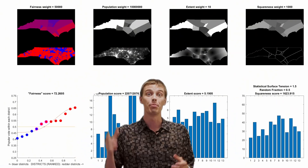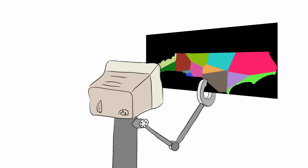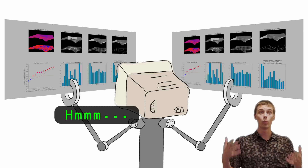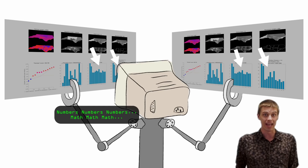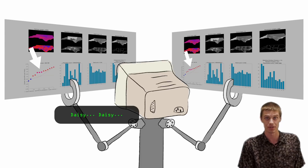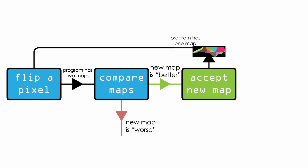Now we need to make these districts better, and the program does this incrementally, one pixel at a time. The program examines the entire map and randomly chooses one pixel on the boundary of an existing district. Then the algorithm makes a new map by flipping that pixel from one district to the other, holds up both maps, and has to decide which is better — which one has equal population distributed across the districts, which has normally shaped districts, and most importantly, fair representation once an election takes place.